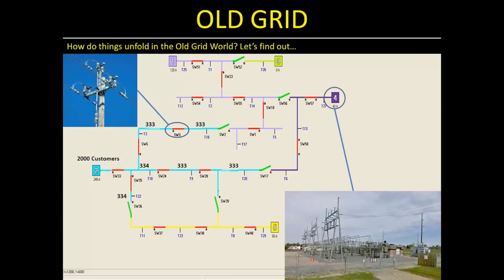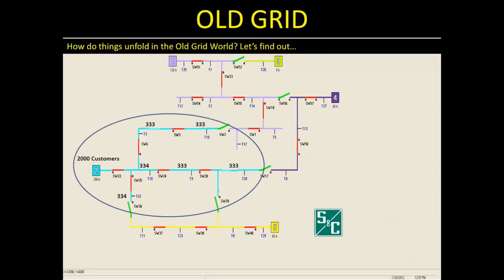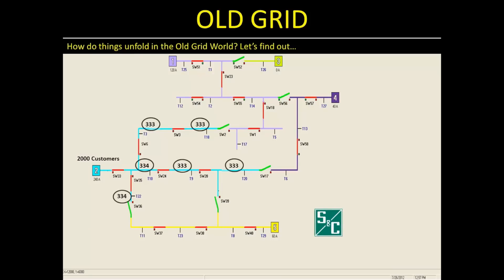For example, substation 4, which is shown as purple, has a purple feeder coming from it. Some feeders appear quite short — they've been stylized so everything fits on the screen, mainly to show that we can draw power from the substations to which they're connected. In a real system, these feeders would be much, much longer. The only feeder drawn in its entirety is the light blue one from substation 2, which has 2,000 customers — a typical mix of 10% commercial and industrial and 90% residential, spread evenly with about 333 customers between each device.